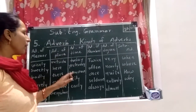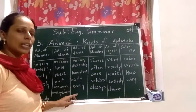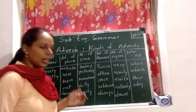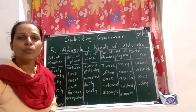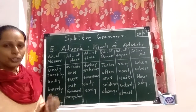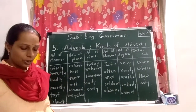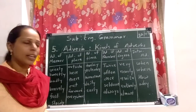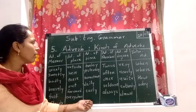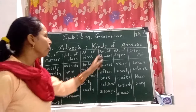The third kind is the adverb of time, which shows when the action is done. Examples: today, yesterday, tomorrow, daily, early. For example: he will come today. She left early. She wrote me yesterday. These are called adverbs of time.